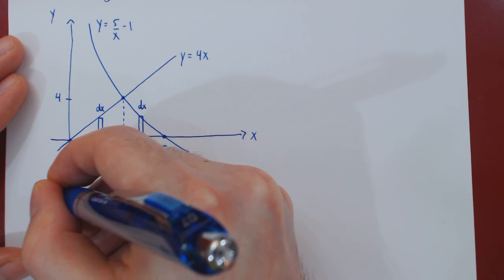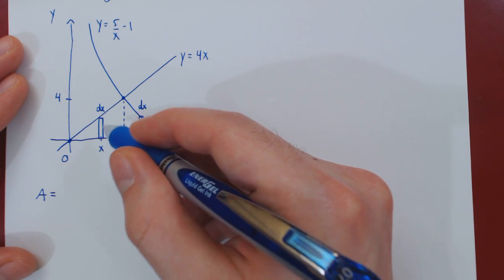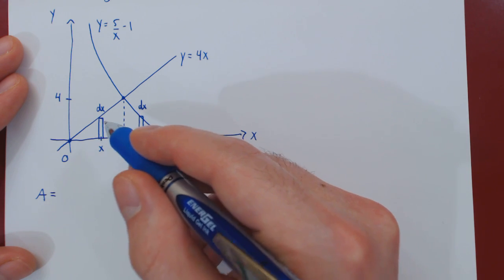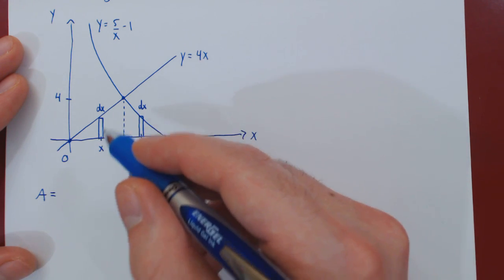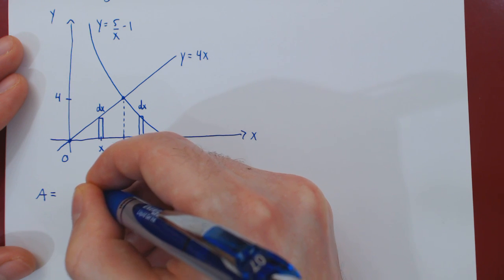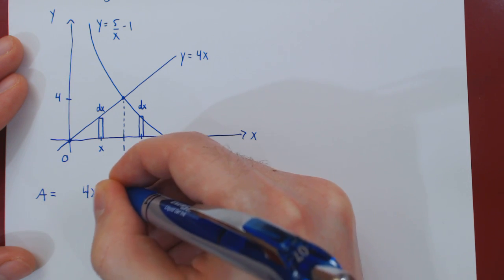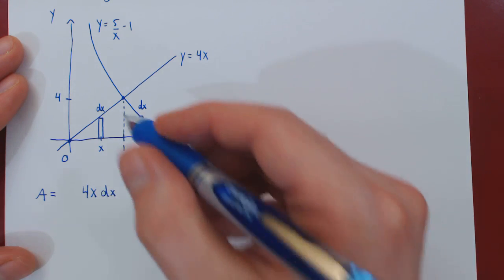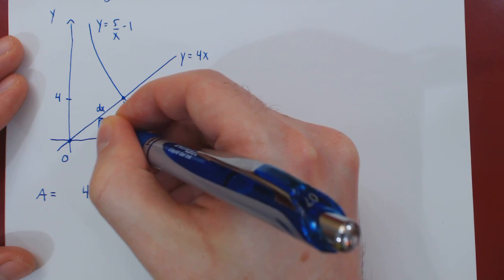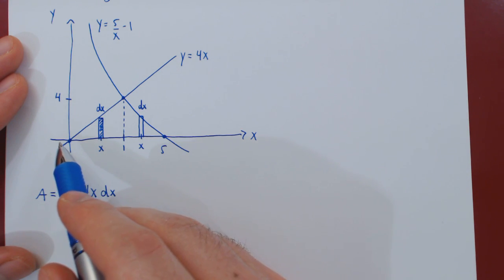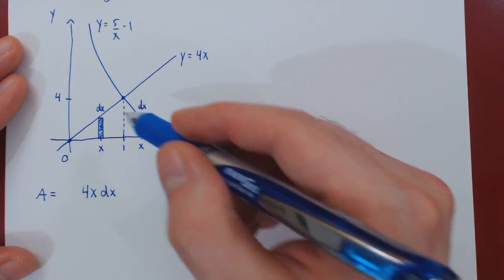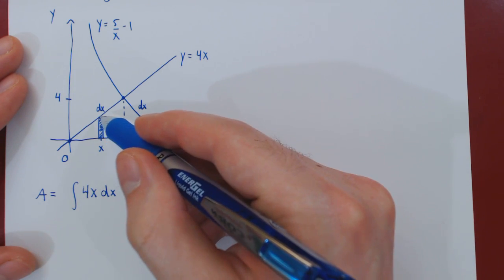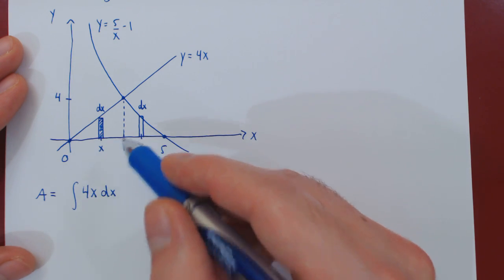The total area of our region will be obtained by the area of the first region from 0 to 1. First we find the area of the rectangle. The height is 4x times the width dx. To get the total area, because this is only the area of this infinitesimal rectangle, to get the total area of our region between x equals 0 and x equals 1, we have to sum the area of each infinitesimal rectangle from 0 to 1.